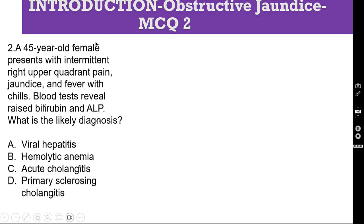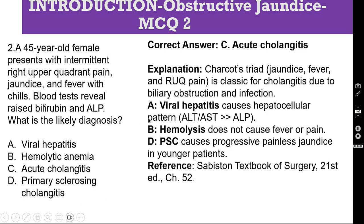MCQ number 2: A 45-year-old female presents with intermittent right upper quadrant pain, jaundice, and fever with chills. Blood tests reveal raised bilirubin and ALP. What is the likely diagnosis? Options: A. Viral hepatitis, B. Hemolytic anemia, C. Acute cholangitis, D. Primary sclerosing cholangitis. The correct answer is C — acute cholangitis.